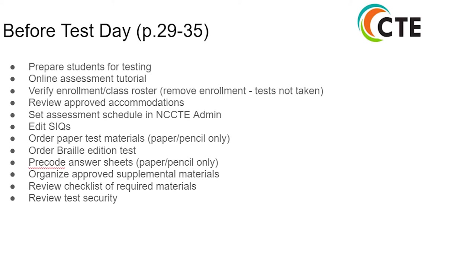Before test day, located on pages 29 through 35, you will find information on how to prepare students for testing, online assessment tutorial information, how to verify enrollment and class enrollment rosters, review appropriate accommodations, set assessment schedule in NC CTE admin, how to edit SIQs, how to order paper test materials, how to order braille edition tests, how to pre-code answer sheets, and how to organize approved supplemental materials. Also included is a review checklist of required materials and a review of test security.